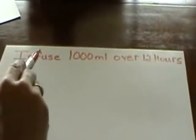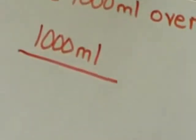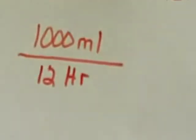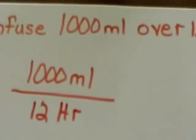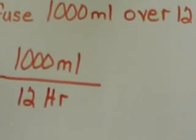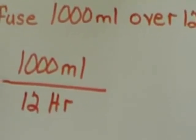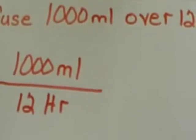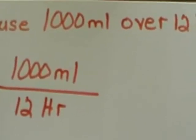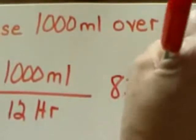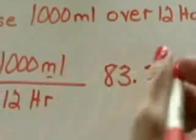You have an order that says infuse 1,000 milliliters over 12 hours. 1,000 milliliters is your volume that goes as your numerator and goes on the top. 12 hours is your denominator that goes on the bottom of the problem. If you then take your calculator and say 1,000 divided by 12, which equals 83.33, and you have milliliters per hour.